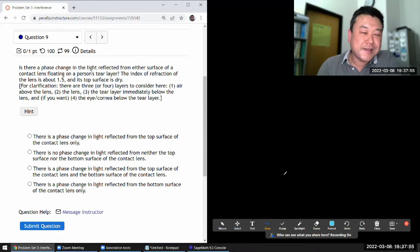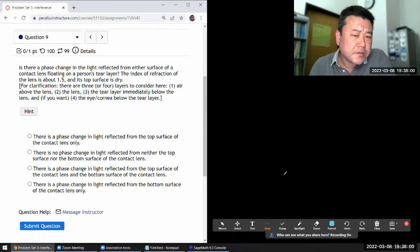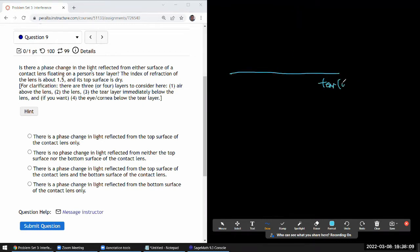So it says, is there a phase change in the light reflected from either surface of a contact? Okay, so it looks like we have some kind of a tear layer. So assuming by tear, they mean basically water. And there's a contact lens layer. Okay, and it's asking about phase change. And if you read through the textbook section, whether there's a phase change on reflection depends on index of refraction.